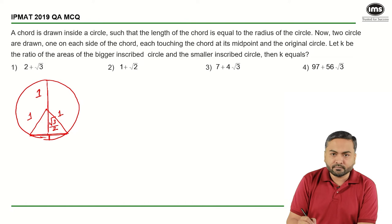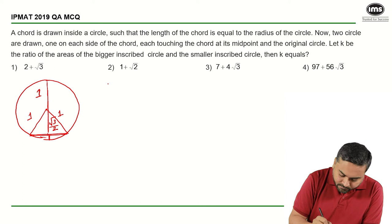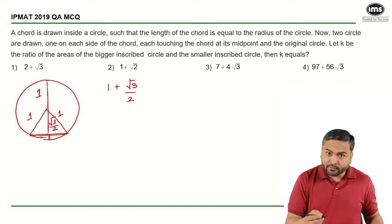The diameter of a bigger circle will be 1 plus root 3 by 2 and similarly the radius of the smaller circle will be the entire line and 1 minus root 3 by 2.